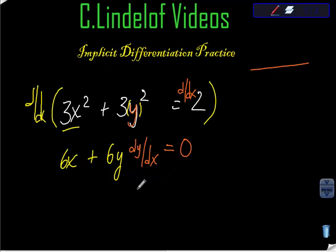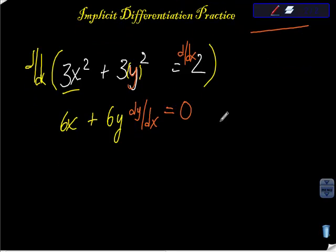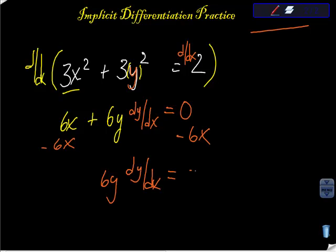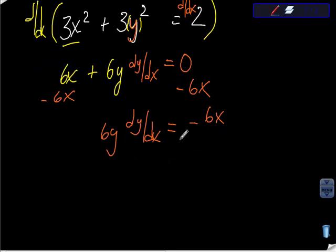Same thing I did before, exactly the same. I'm going to do some algebra now because I'm trying to get this dy/dx by itself. I'm going to subtract 6x from both sides and get 6y dy/dx equals negative 6x. I'm going to divide both sides by 6y and get dy/dx equals negative 6x over 6y.